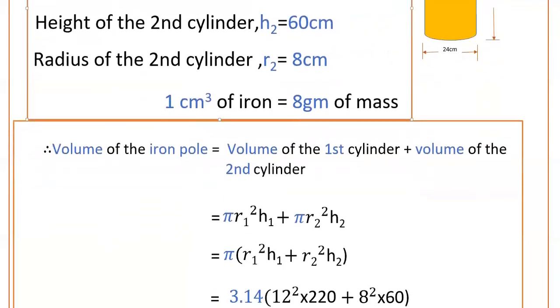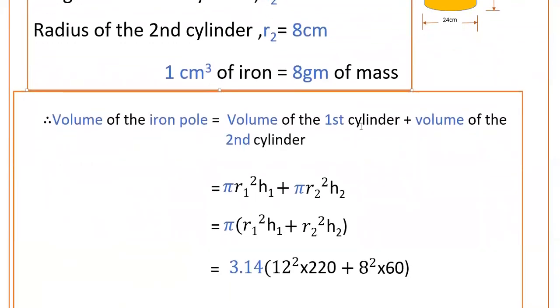Volume of the cylinder is πr²h. So first cylinder is πr₁²h₁ plus πr₂²h₂. Taking π common: π(r₁²h₁ + r₂²h₂).